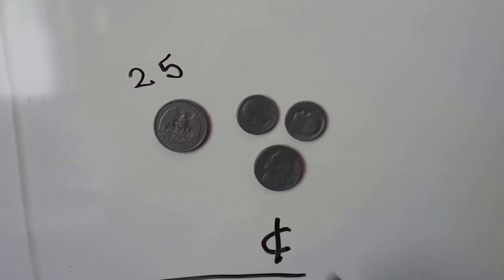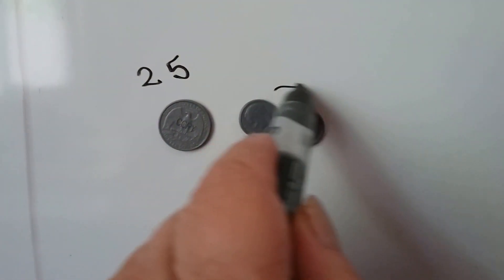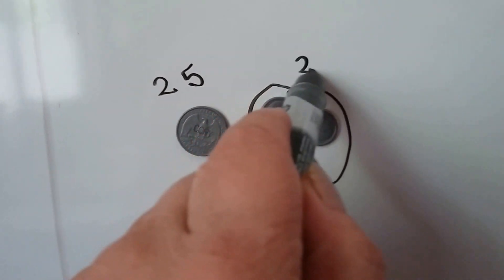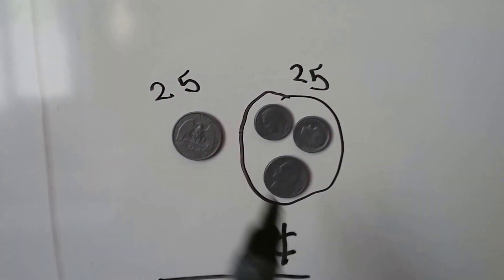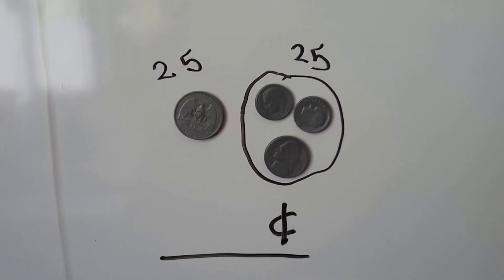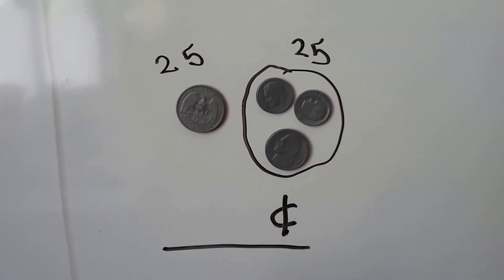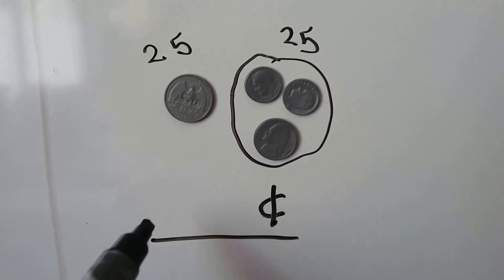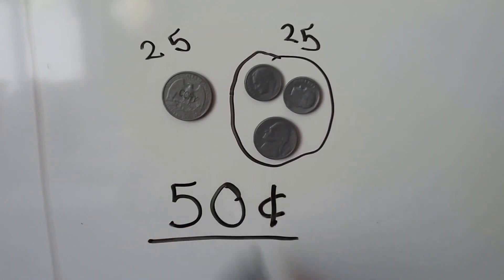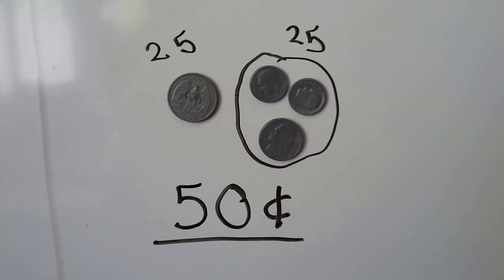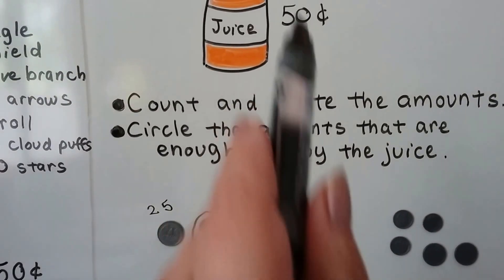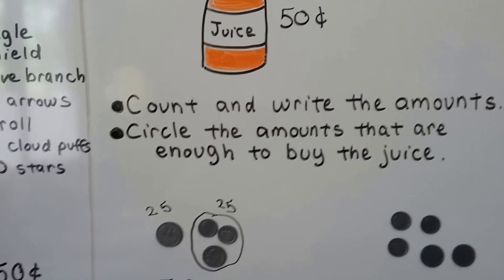We have two dimes and a nickel. Remember, two dimes and a nickel equals 25 cents — that's like having two quarters. We can skip count by 25s: 25, 50. That's 50 cents — that's enough to buy the juice!